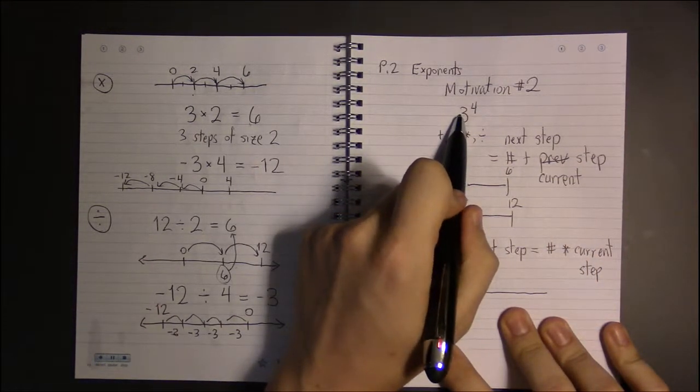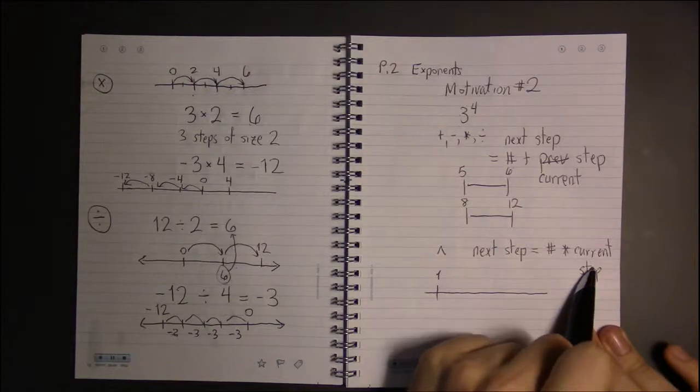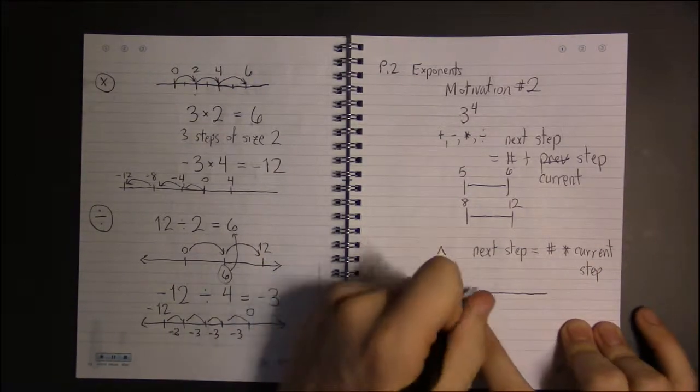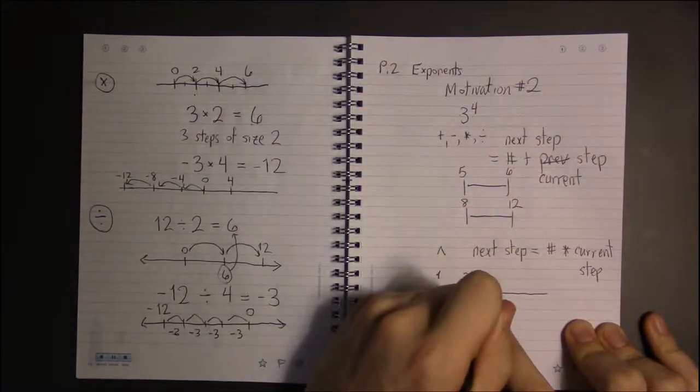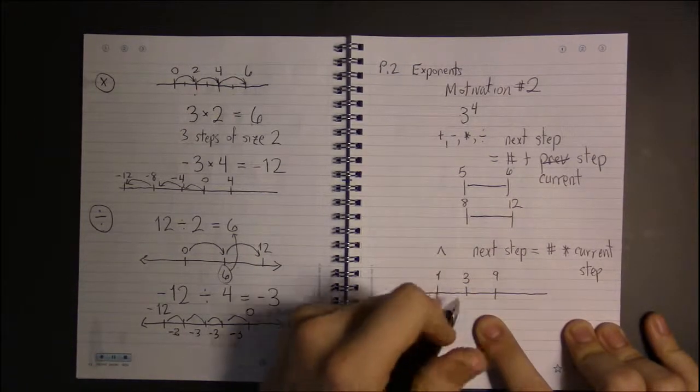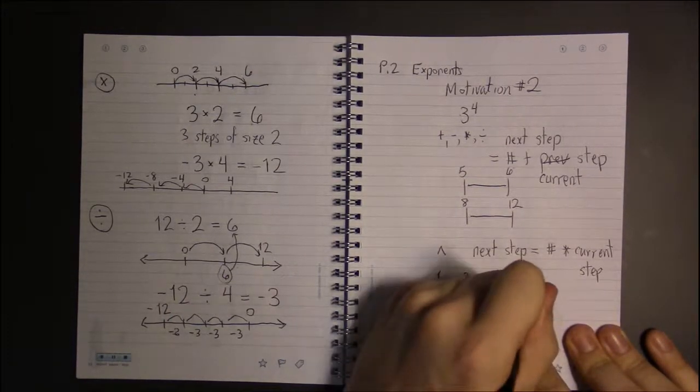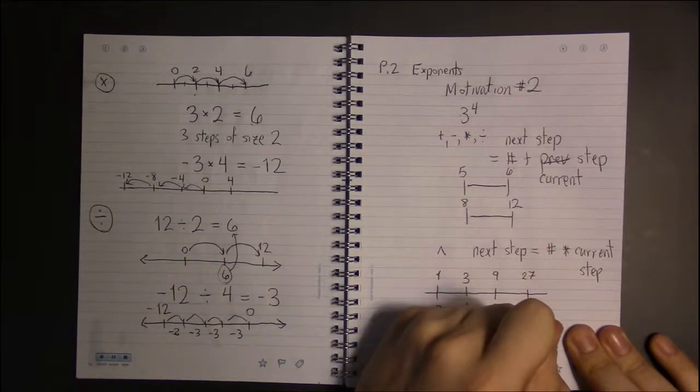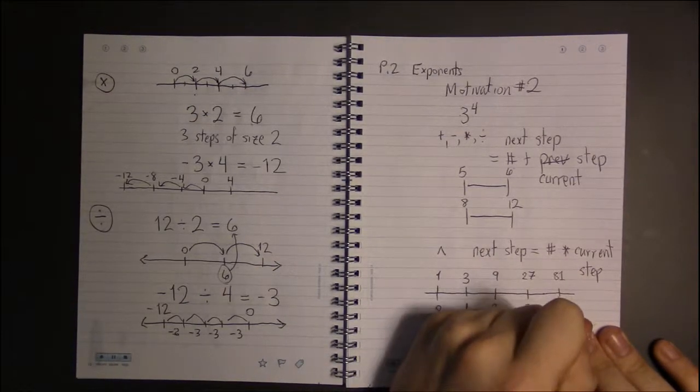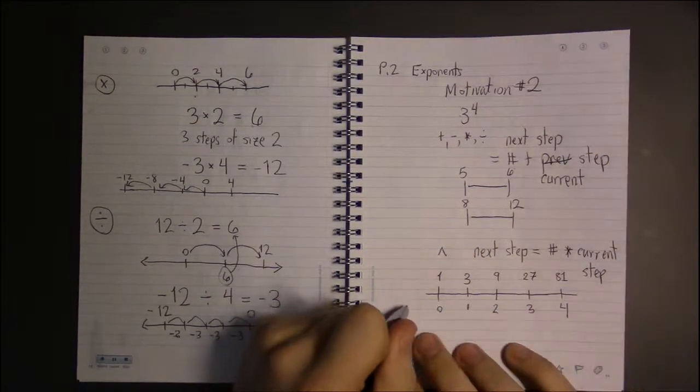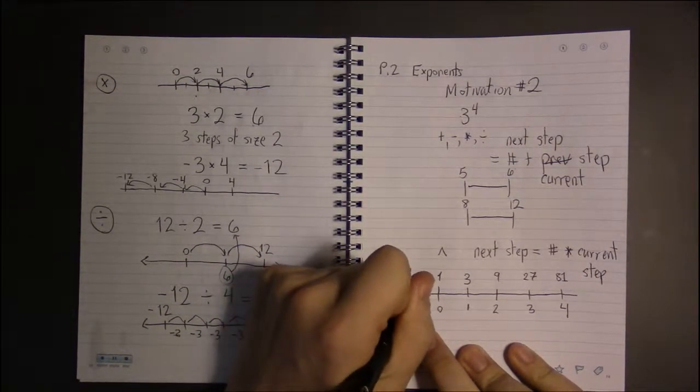So if we look at three to the fourth, three is what you multiply by to get your next step. So one times three, that's the next step. Three times three, this is step two. Three times nine, this is step three. And then three times 27 is 81. So these are our steps, and these are the values at each step.